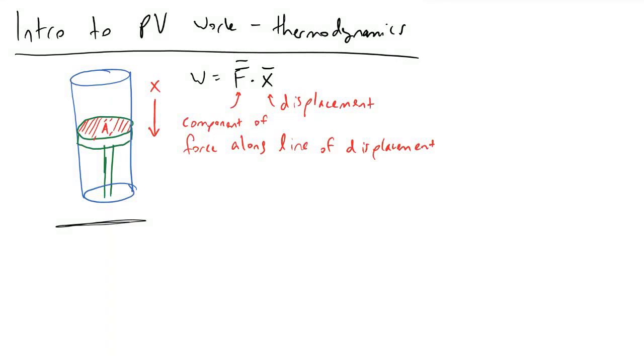In this video we are going to be deriving the formula for pressure volume, otherwise known as PV work. This is a common thing that you will discuss in introductory thermodynamics courses, and the very first place that we're going to start is turning to the definition of work that we learned from high school physics.